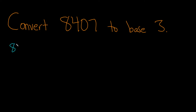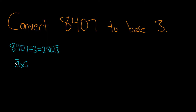So we start with 8,407 and divide by 3. If you put this in your calculator, 8,407 divided by 3, I got 2,802.33 repeating. To find the remainder, you take the decimal part and multiply it by 3. So 0.33 times 3 gives you 0.99, which is basically 1. So the remainder here is 1.